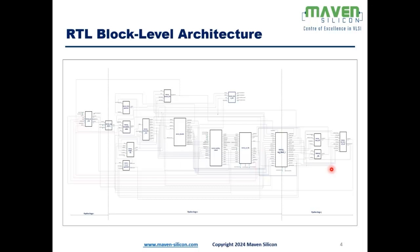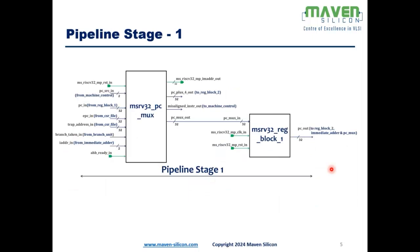Stage 3 executes instructions with the help of an ALU block, and the result is written back to the CPU register. Stage 1 has the PC mux and Reg Block 1. The PC mux acts as the program counter that generates the address for the next instruction to be fetched — this is the IM address out port, the address bus for the next instruction. Reg Block 1 is the Stage 1 pipeline register used for synchronization.